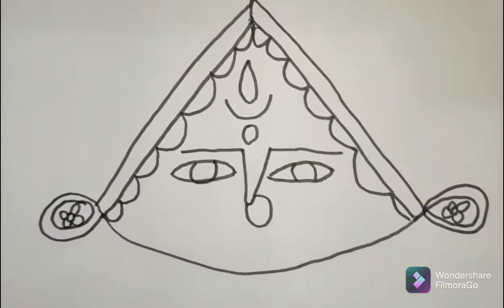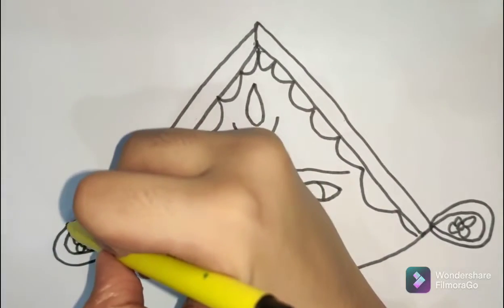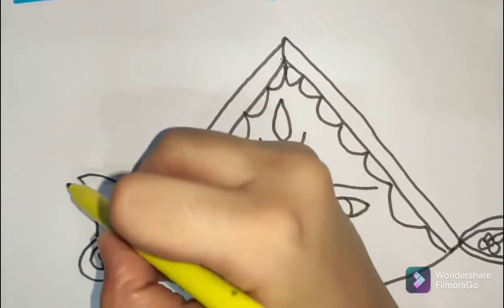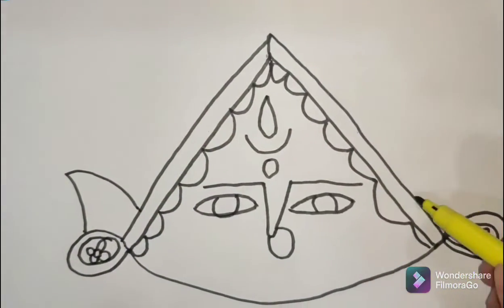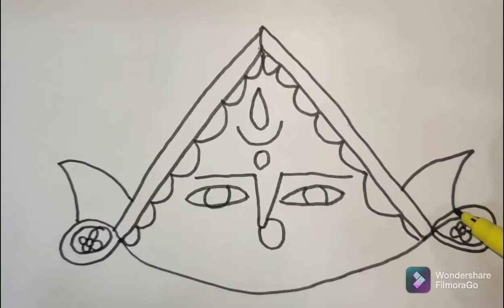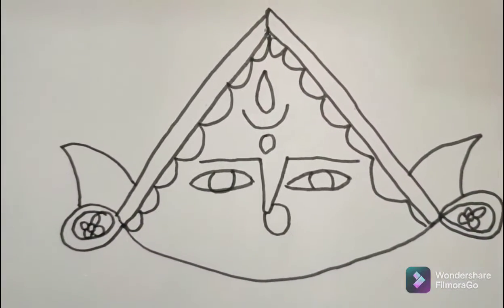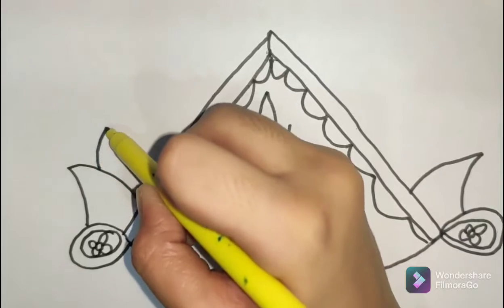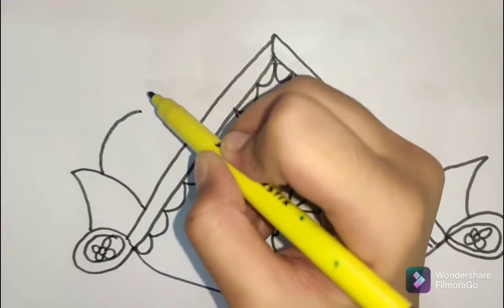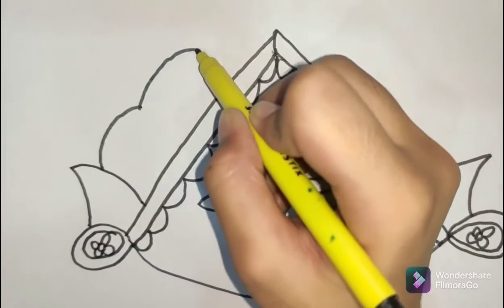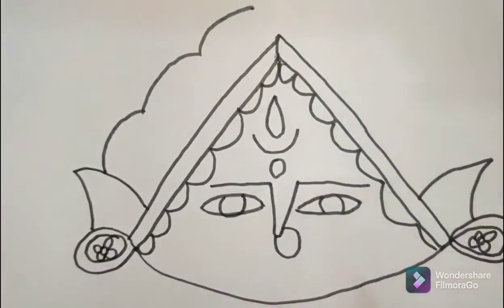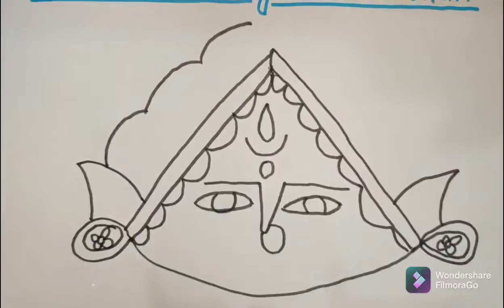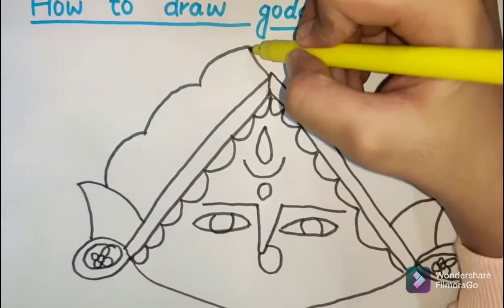Now we need to make this sharp thing over here and even on the other side. We need to make flowers in the ovals. Now we need to make U's which are upside down like this. It's like a crown for Devi Mata, also known as a mukut in Hindi.